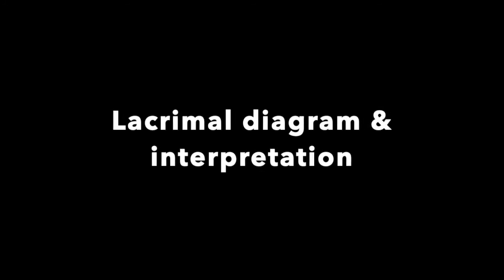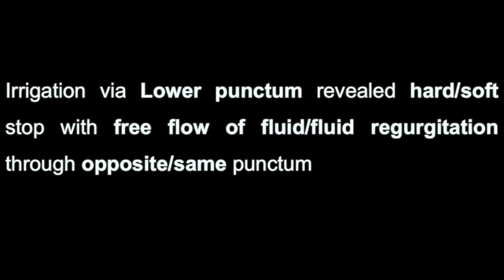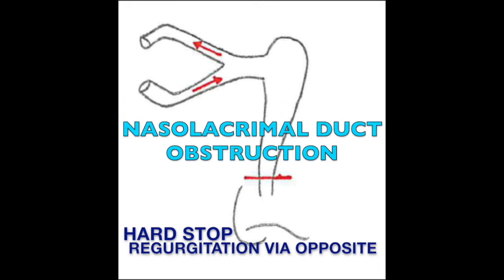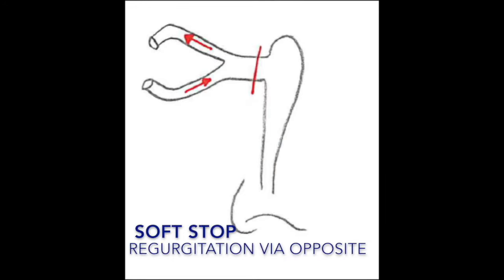Lacrimal syringing is a subjective test, hence its interpretation should be performed carefully. One should document the type of stop and the irrigation findings. In lacrimal duct obstruction, one gets a hard stop with regurgitation of saline from the opposite punctum.